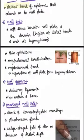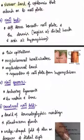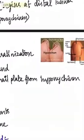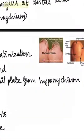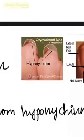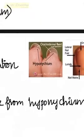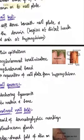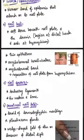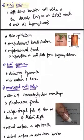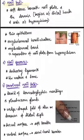The onychodermal band represents the separation of the nail plate from the hyponychium. The nail groove is present near the lateral nail fold and contains anchoring ligaments which help in the connection between the nail matrix and the bone.